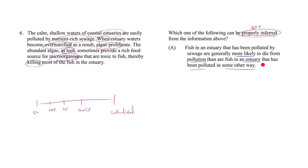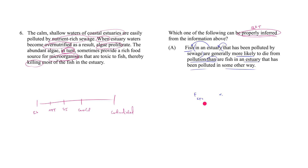What kind of claim is this? It's a comparative claim — heavily repeated on the LSAT in logical reasoning. We are comparing fish in an estuary that's been polluted by sewage against fish in an estuary polluted in some other way. That's the subject: fish in an estuary polluted by sewage. The predicate is: are generally more likely to die from pollution.